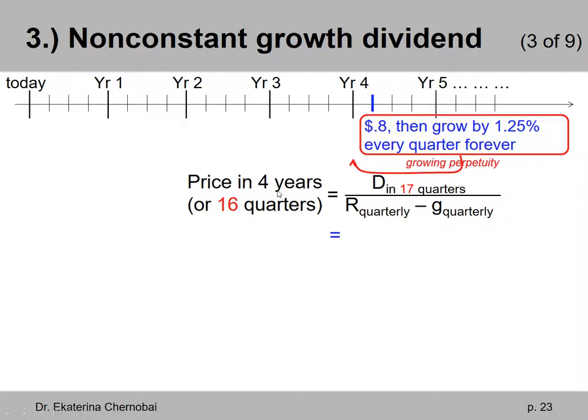The important detail is to realize that when we use this growing perpetuity present value formula, it gives us the discounted sum of all dividends one time period before the very first dividend payment. So it gives us essentially what we can call the price per share in 16 quarters from today, or in four years. So that's one quarter before the very first dividend in this endless sequence.